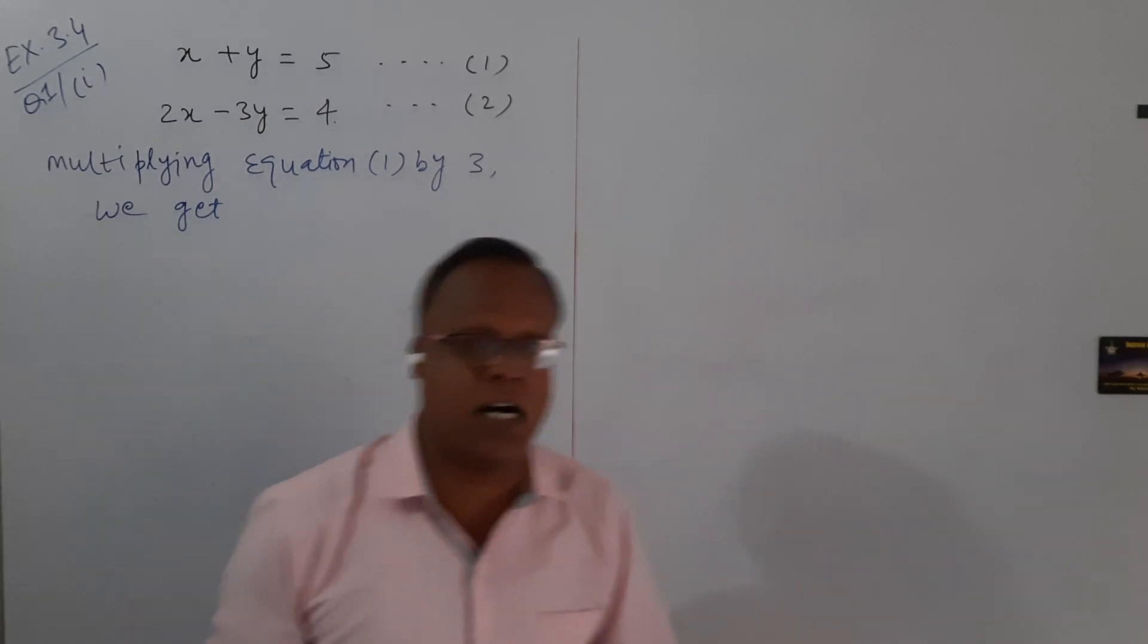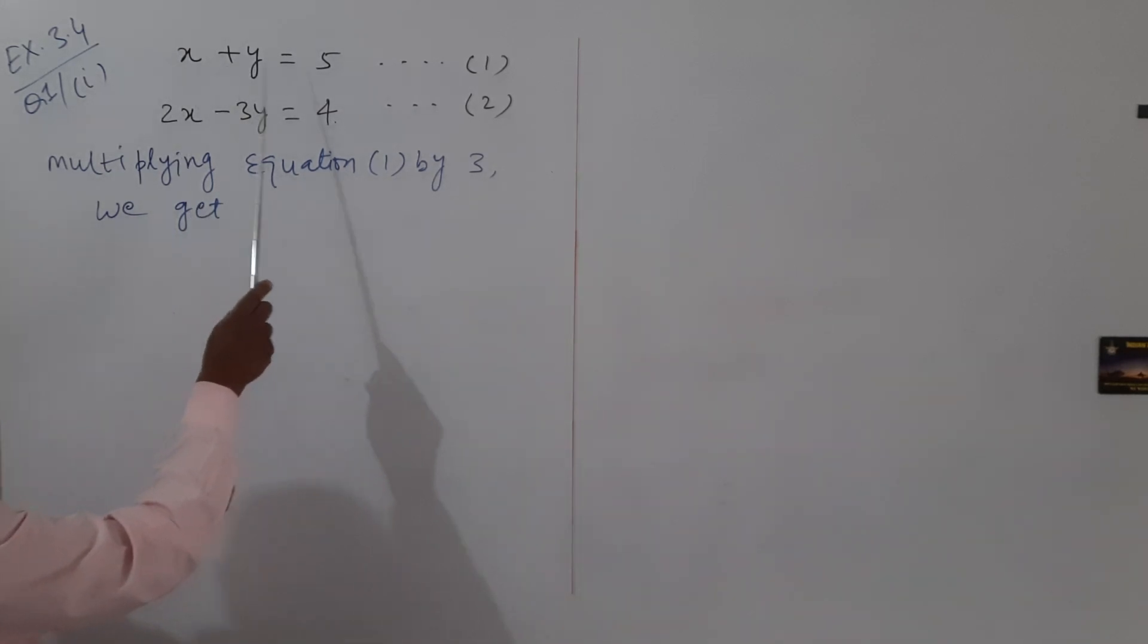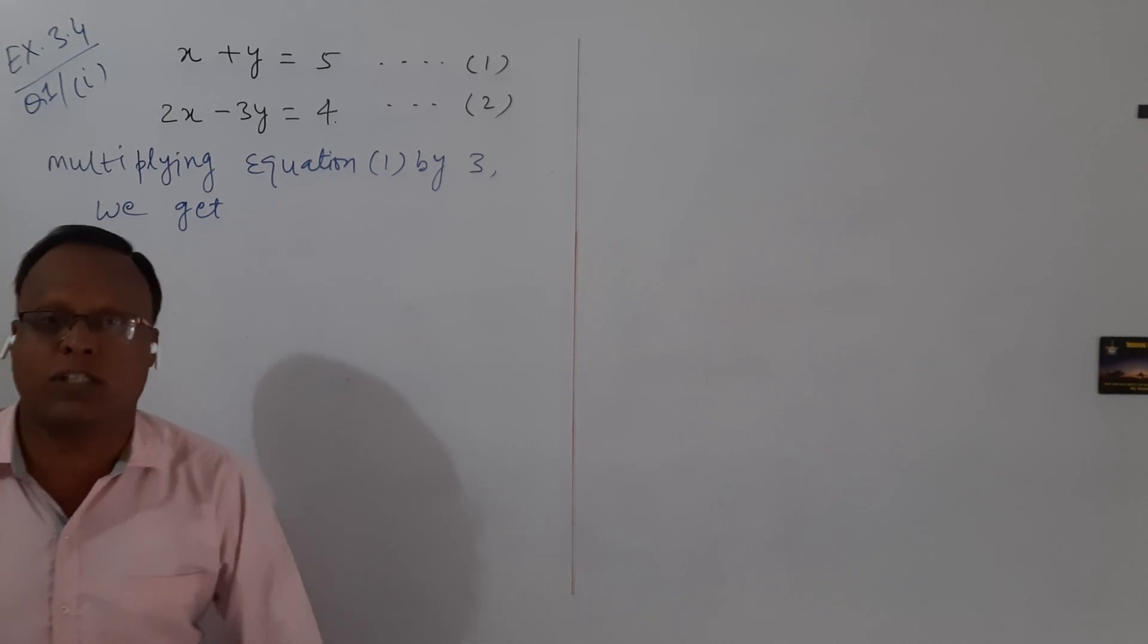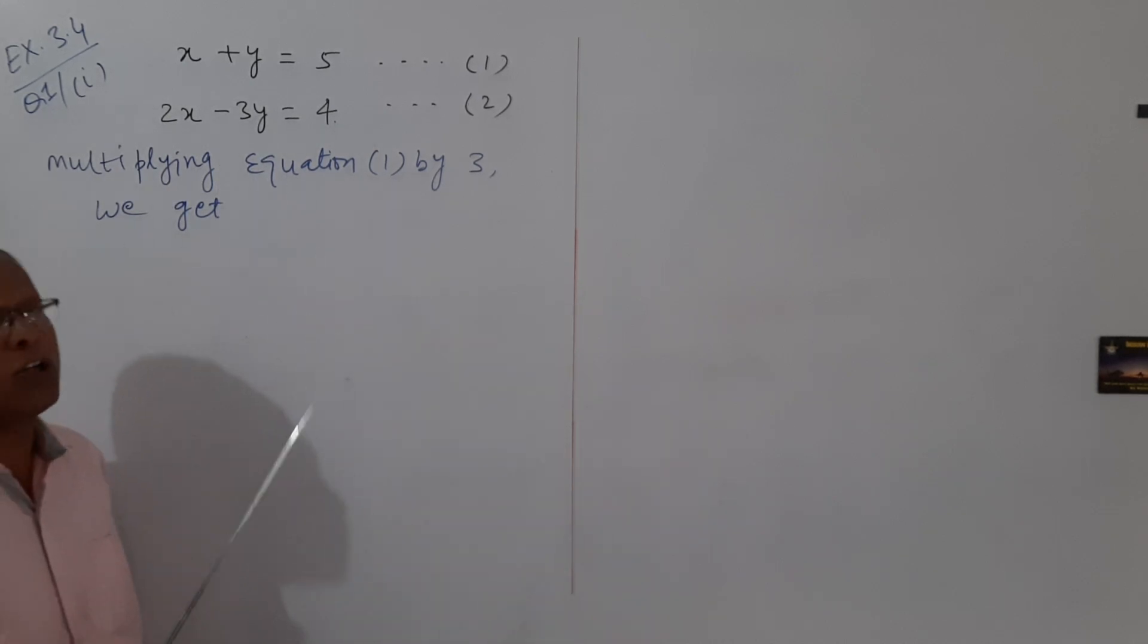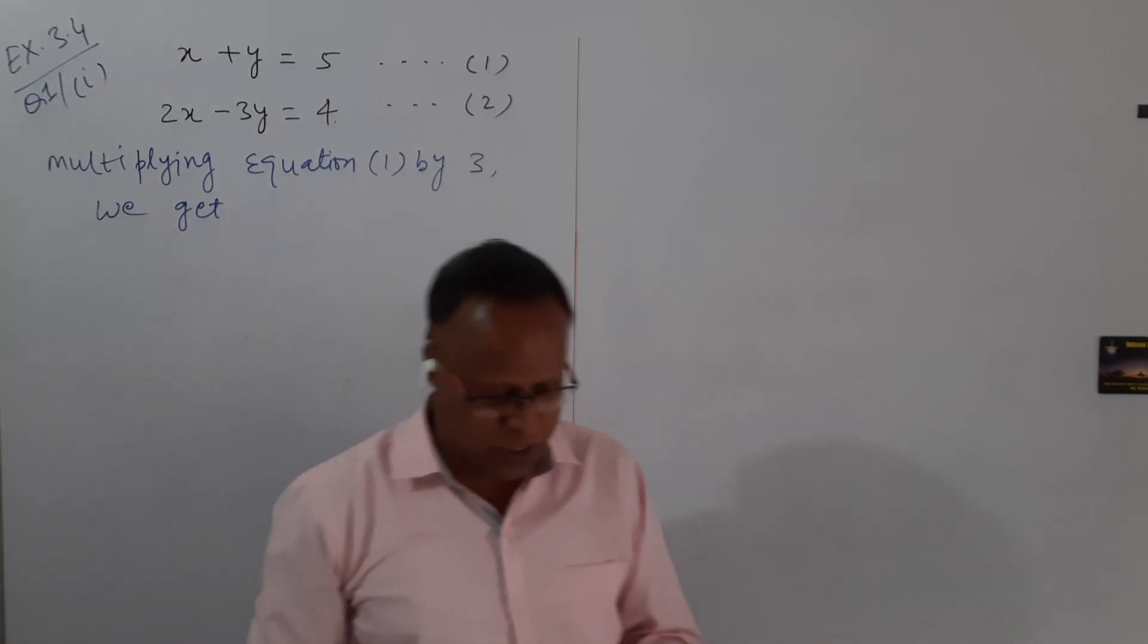The given equations are x plus y equals 5, this is equation 1, and 2x minus 3y equals 4, this is equation 2.